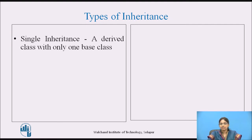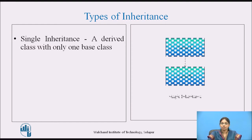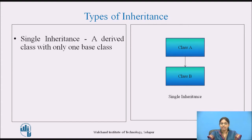The first type is single inheritance. In this type of inheritance, a derived class has only one base class. Here it shows a structure where we have only one base class from which we are deriving only a single derived class. This is called single inheritance.